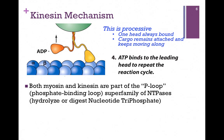Another way in which myosin and kinesin are similar is that they're both part of a family called NTPases. NTP stands for nucleotide triphosphate, and NTPases are enzymes that hydrolyze a nucleotide triphosphate. This applies to both kinesin and myosin because they hydrolyze ATP in order to move their heads or levers. They're also part of what's called a superfamily - they have a phosphate binding loop, so they're called P-loop NTPases.